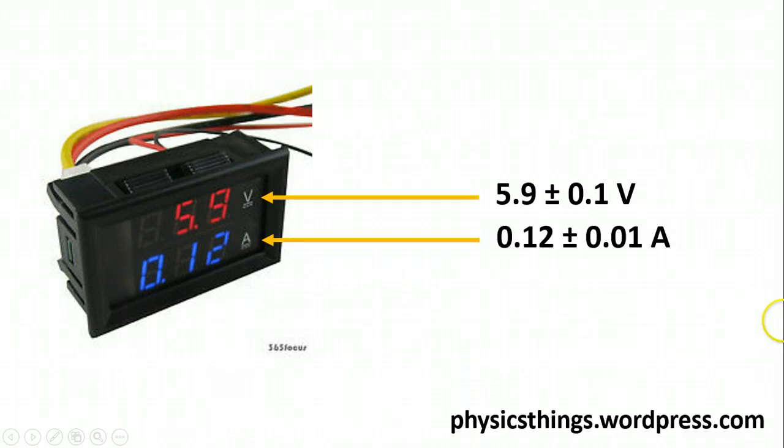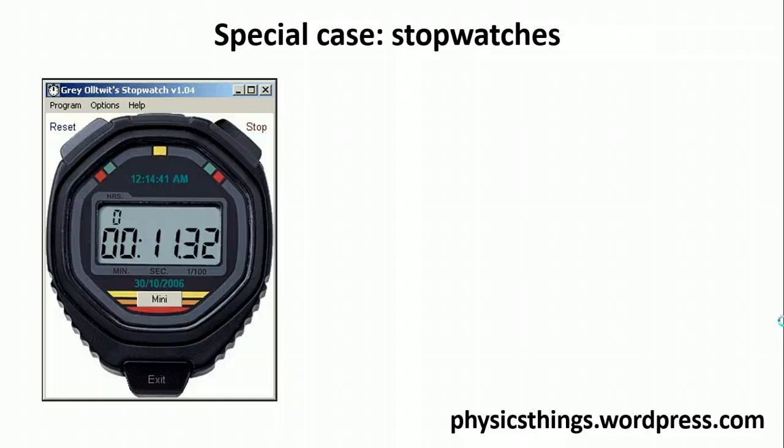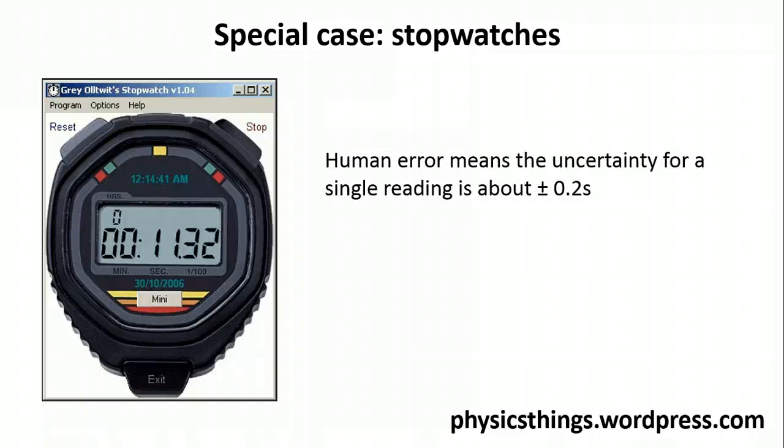Of course, a special case for this is stopwatches. Now, looking at this picture here, you might say that the precision of my instrument here, and therefore the absolute uncertainty in this measurement of 11.32 seconds, would be 0.01 seconds. But there is a problem: human error is actually nowhere near as precise as the precision on this instrument. And so, when we're dealing with taking time intervals using a stopwatch, we always say that the human error is about 0.2 seconds. So in this case, the absolute uncertainty of my reading would be 11.32 seconds plus or minus 0.2 seconds.